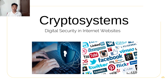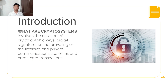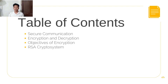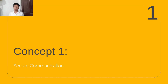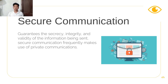Internet websites make use of cryptosystems to secure the credentials of their users. A cryptosystem is a digital system involving the creation of cryptographic keys, digital signatures, and the confidentiality of private communications such as email, private messages, and credit card transactions — all concerned with digital security. There are four concepts that play a role in cryptosystems. The first is secure communication, which guarantees the secrecy, integrity, and validity of information being sent in private communications.